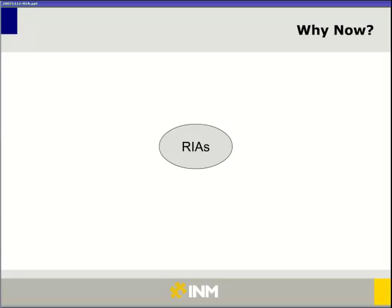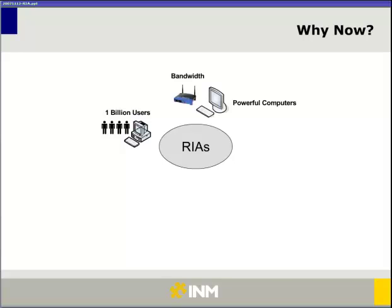The number one reason rich internet applications are available now is that the users are there. The internet has become so prevalent, and the access people have is really thick bandwidth. Desktops available today are incredibly powerful and able to take on some of the application processing load. Bandwidth, which used to be quite expensive, has become really available in most countries and at much higher speeds, so you can push out rich content without concerns about it not being accessible to all users.